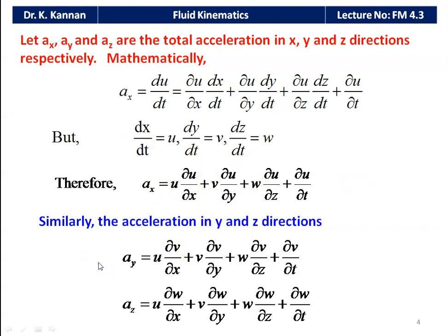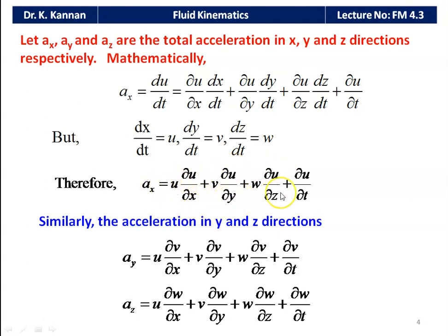To understand the logic of these equations: in all four terms, the first three terms have u, v, w in the same sequence. The last term is the velocity differentiated with respect to time: ∂u/∂t, ∂v/∂t, ∂w/∂t. For ax, u is velocity in the x direction differentiated with respect to x, y, and z. Similarly, v is differentiated for ay, and w for az. Understanding this logic makes it easy to remember.